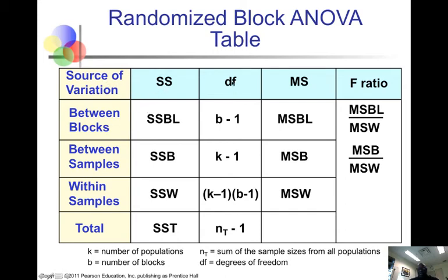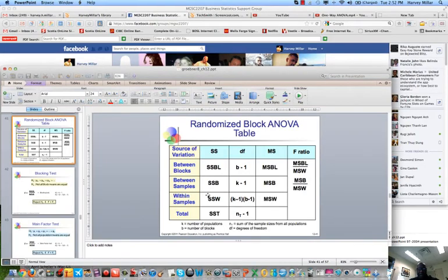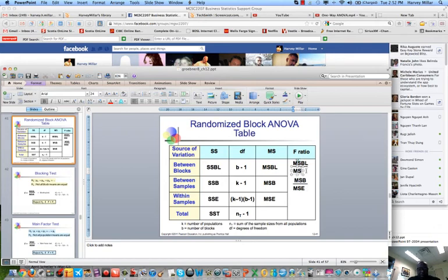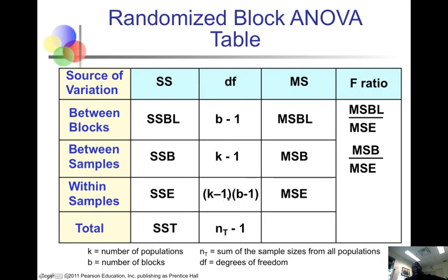The sources of variation include the sum of squares, the degrees of freedom, the MS values, and the F ratio. We could calculate the sum of squares due to blocks, sum of squares due to the groups between the samples, and then the sum of squares for the error. SSE is just the SSE we've already calculated. So MSE is SSE divided by the degrees of freedom. We take all of these values and calculate the F statistic.